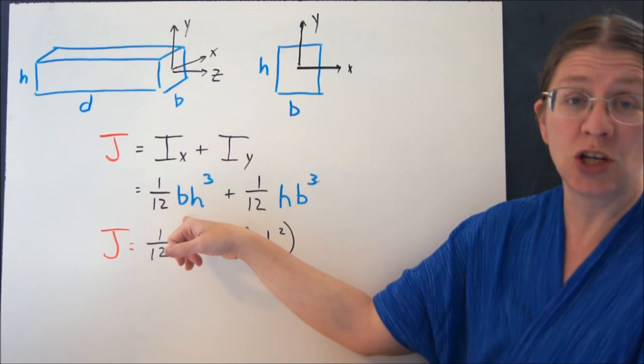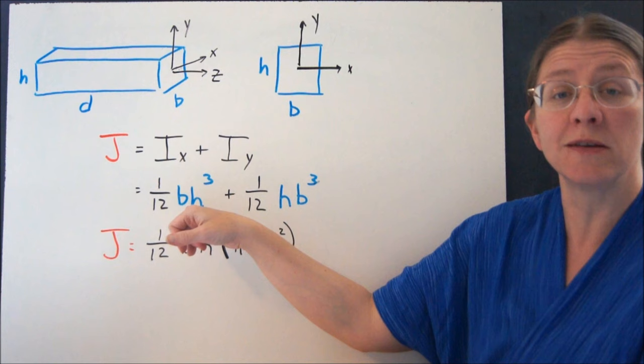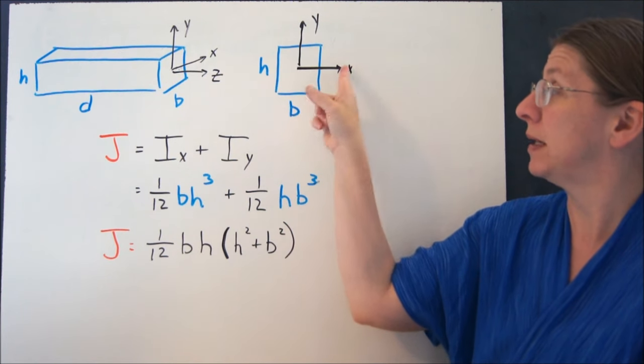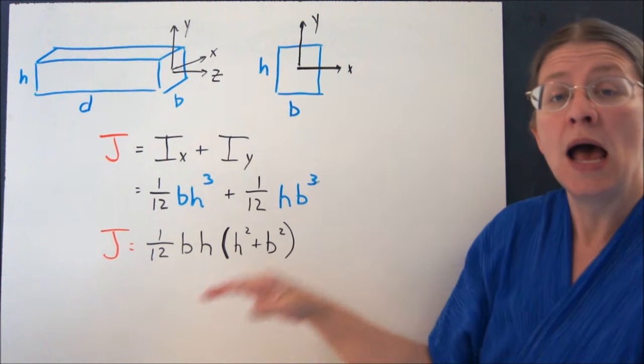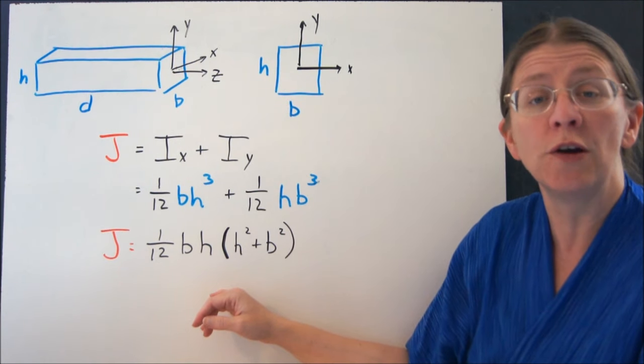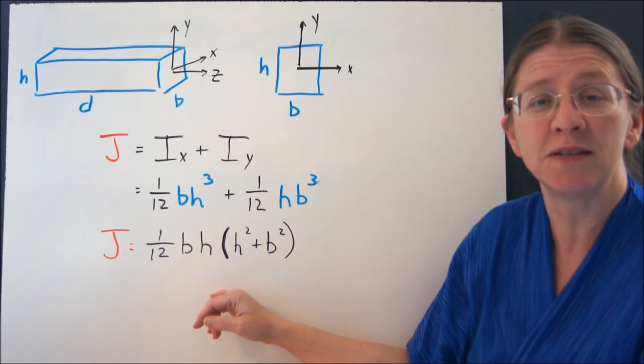It's a rectangle. You've got 1/12 bh³. And you're going to cube the one perpendicular to the axis. So h is perpendicular to the x-axis. B is perpendicular to the y-axis. And now you've got J, which you can calculate, is 1/12 bh times (b² plus h²).